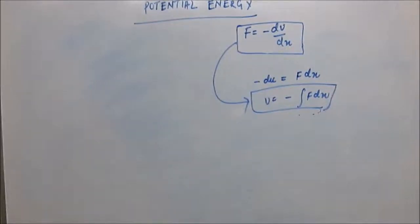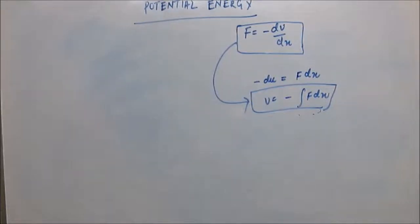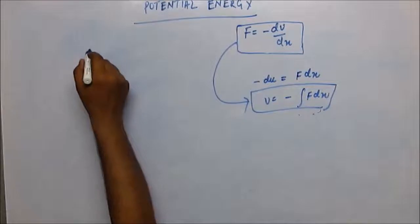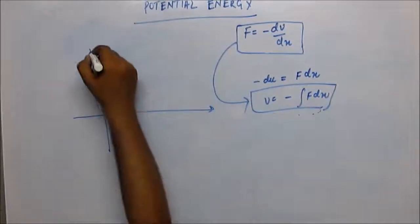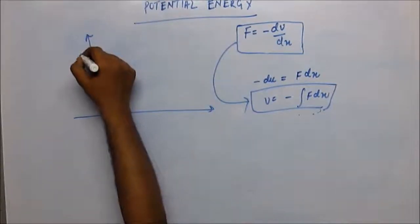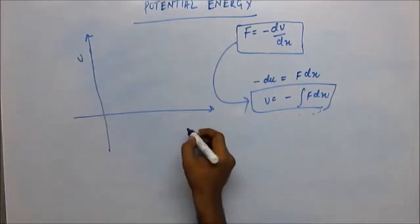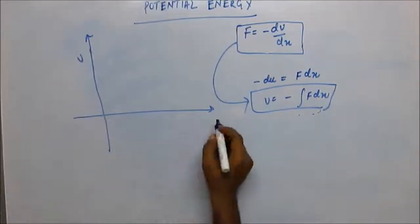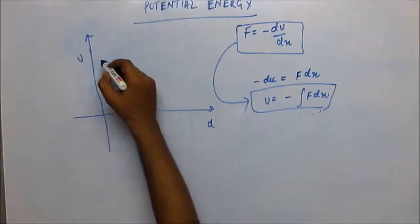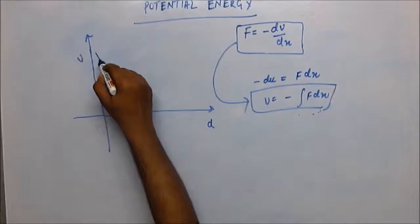If you have studied atomic structure, they must have taught you this graph — potential energy versus intermolecular distance d — and the graph comes out like this curve.